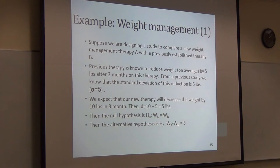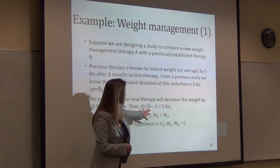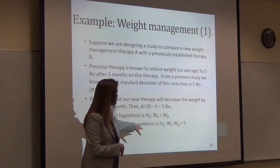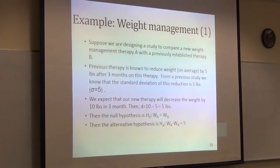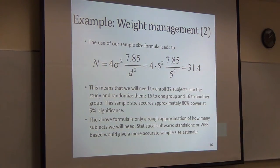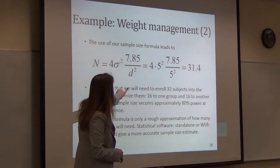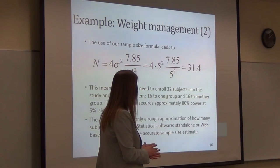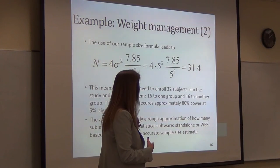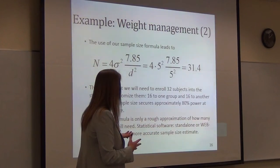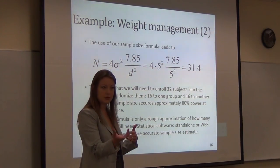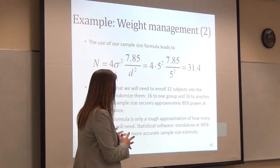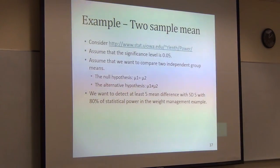Back to the weight management example: in a 3-month period there's going to be a weight loss of 5 pounds. The null hypothesis is that the groups are equal; the alternative hypothesis is the difference is 5. Using the sample size formula and plugging in 5 as the weight change, we get a sample size of 31.4 — we round up to 32 subjects, randomized 16 into each group. This gives us 80 percent power and 5 percent significance level. This is a rough approximation, and the result may change slightly depending on the software used.